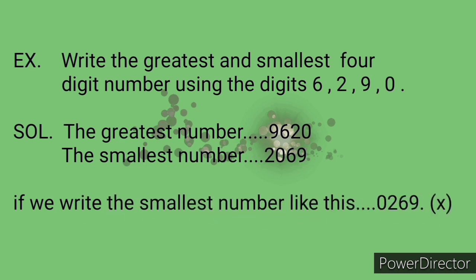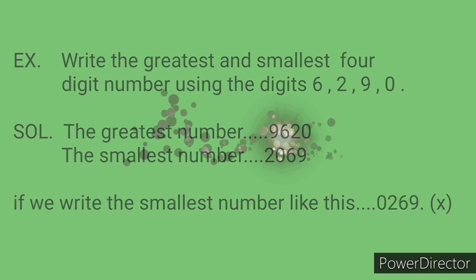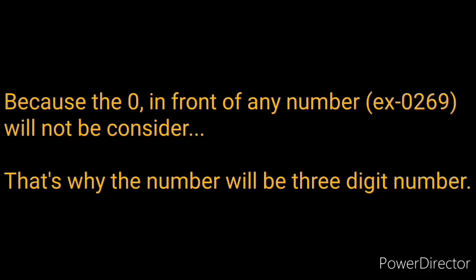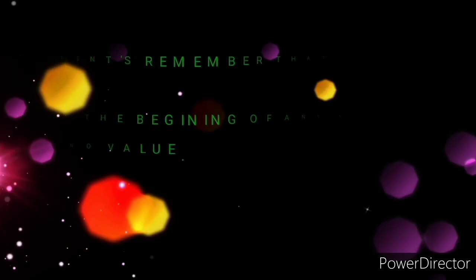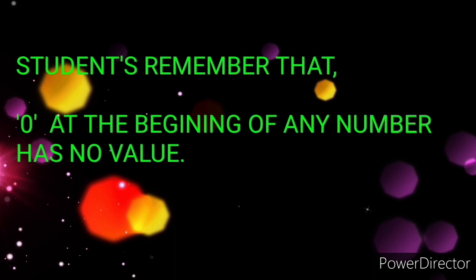Solution. The greatest number will be 9620. And the smallest number will be 2069. If we write the smallest number like this, 0269, it will be wrong. Why? Because the 0 in front of any number, example 0269, will not be considered. That's why the number will be a 3 digit number. Students, remember that 0 at the beginning of any number has no value.